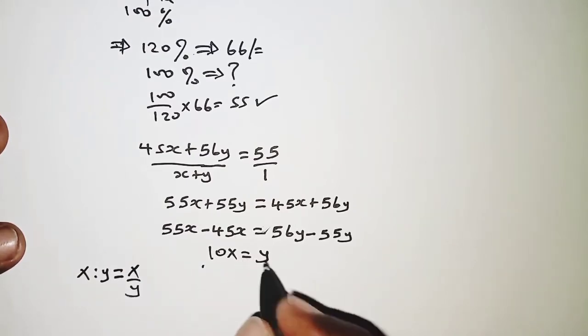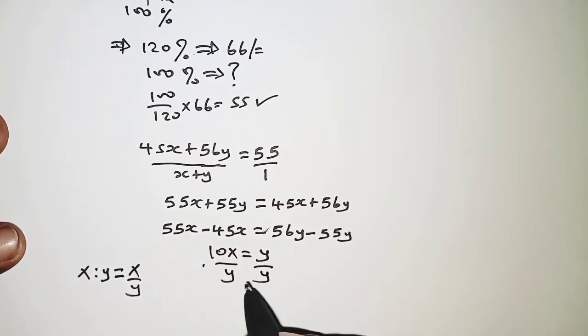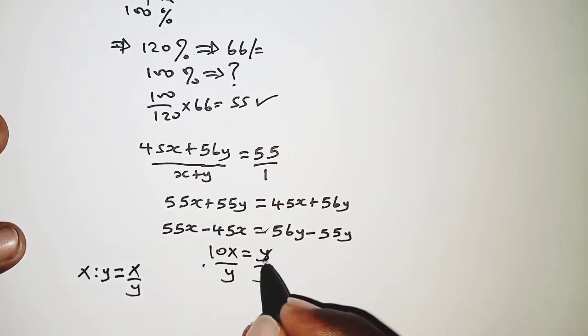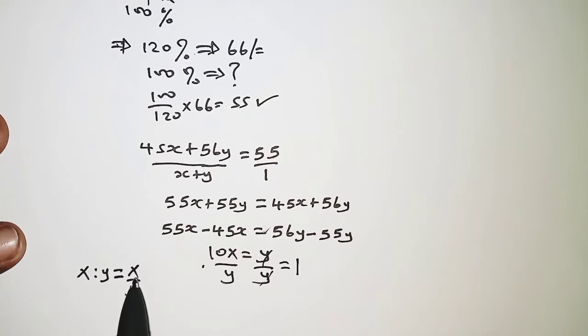So first we'll have to divide both sides by y, so y divided by y gives us 1. So we have 10x over y.